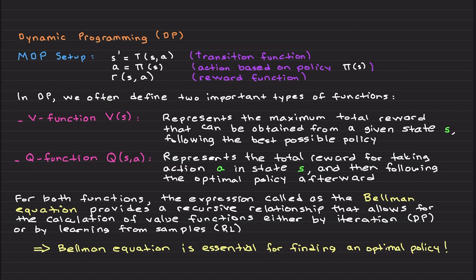On the other hand, unlike V function, Q function depends on states and action, and it represents the total reward for taking action a in a particular state s and then following the optimal policy afterward.